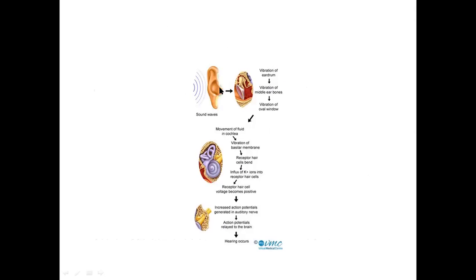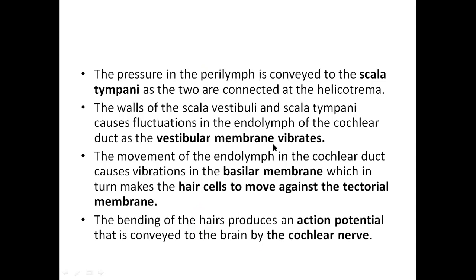So the vibrations pass through the eardrum and ossicles into the cochlea, where the perilymph is vibrating. The pressure in the perilymph is transmitted from the scala vestibuli to the scala tympani, as they are connected with each other. Once these vibrations are passed on to the endolymph of the scala media, the basilar membrane starts vibrating. This movement of the basilar membrane causes movement in the organ of Corti — especially the hair cells — which start moving up and down, causing the cilia on the apical part of the hair cells to start touching the tectorial membrane.